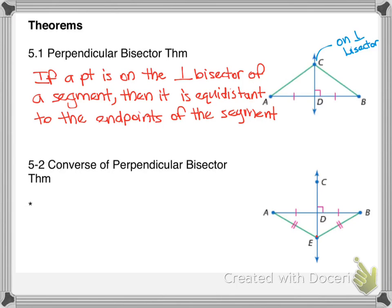So what does it mean to be equidistant? Think back — it means the same distance from a certain point. Since C is on the perpendicular bisector, C-A is congruent to C-B. So because C is on the perpendicular bisector, we know that AC is congruent to CB. Those segments have to have the same length.